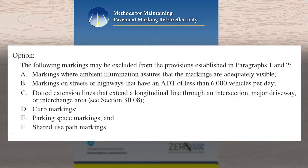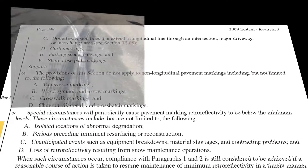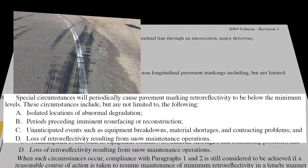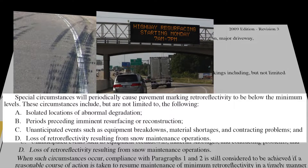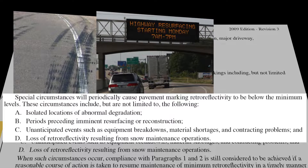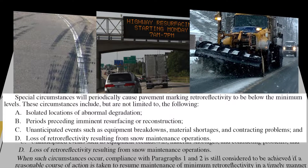An option allows agencies to exclude certain longitudinal markings from the maintenance method. Finally, the MUTCD recognizes special circumstances that will periodically cause pavement marking retro-reflectivity to be below minimum levels.